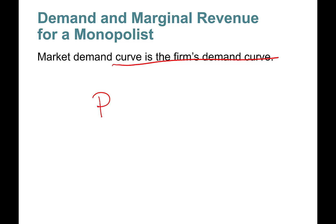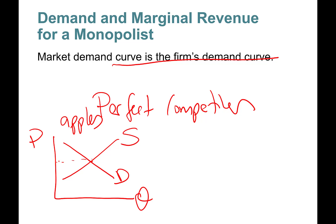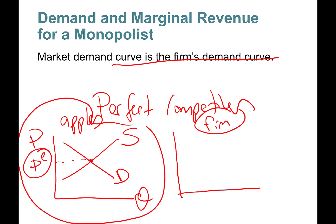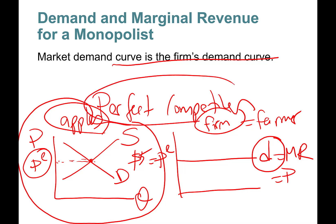Just to remind you, in perfect competition there are many firms, so you have a market demand curve and a market supply curve — this is the market for, say, apples. Price and quantity: supply and demand intersecting determines the equilibrium price. For one perfectly competitive firm, at that price level he or she can sell whatever they want. This is a perfectly competitive company's demand curve, which equals marginal revenue, average revenue, and price.